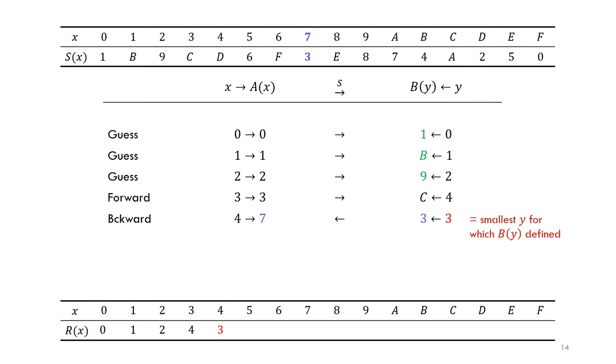In the next step, we again cannot use the linearity of A because 4 is a power of 2. But we don't have to guess because we can do a backward sweep. Since we didn't use the output 3 yet, we can put it here in R since we want the smallest possible output. We can use the linearity on B to determine that B of 3 equals 3, which is the XOR of 1, B, and 9. Then we look up the inverse of S, which is 7, which gives us that A of 4 equals 7.